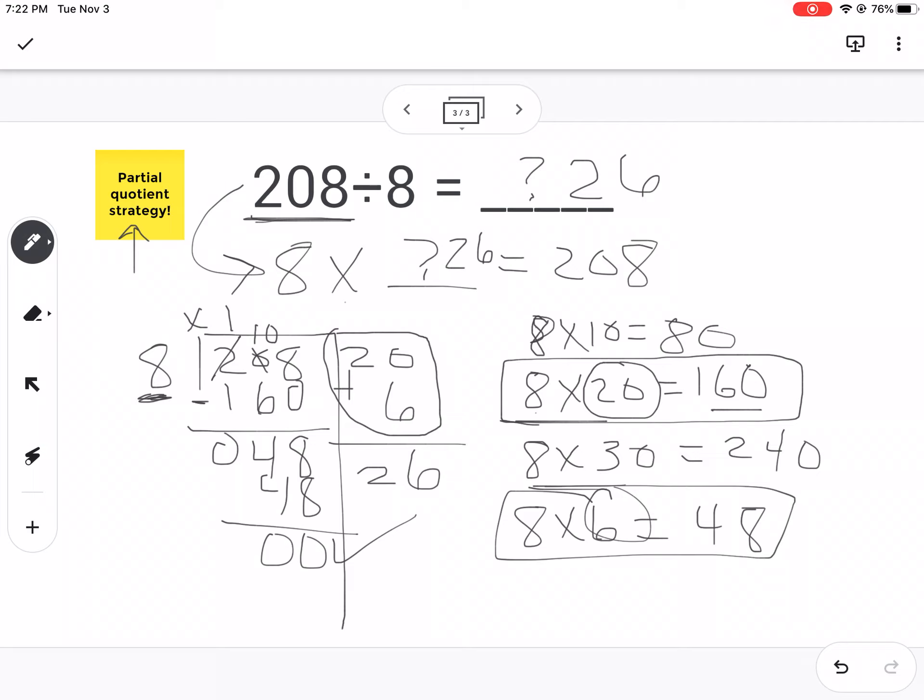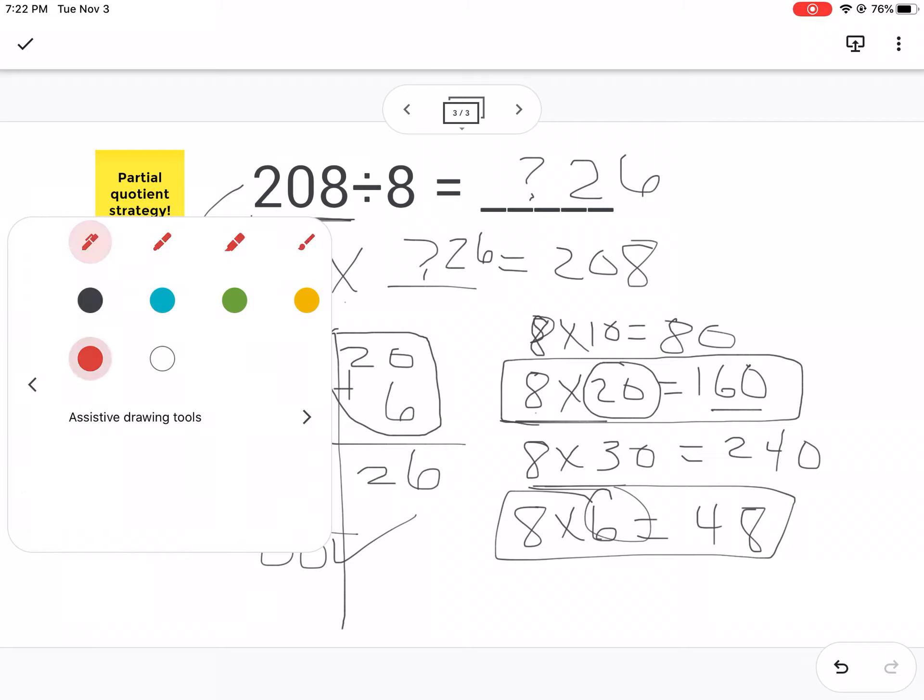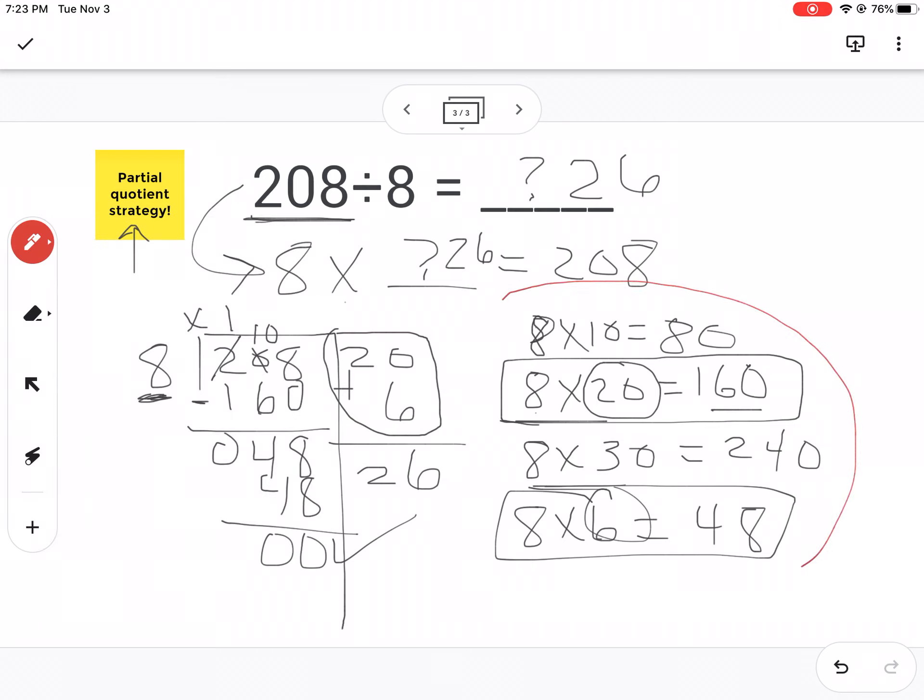So again, being able to vomit out some multiplication is going to be important. And then organizing your work in this little diagram over here is also going to be important in order to get your answer. We're going to be doing a lot of practice with the partial quotient strategy, but I hope this video was helpful.